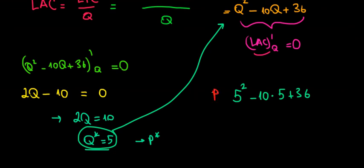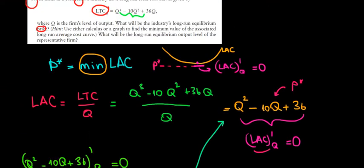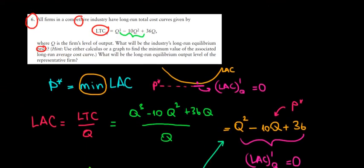That gives us 25 minus 50 plus 36. Working out the math: 25 minus 50 is negative 25, plus 36 equals 11. So the long-run equilibrium price is $11, and we are done.